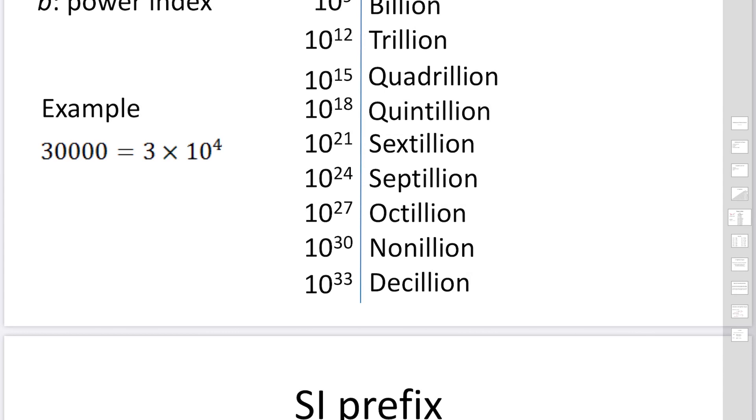For example, 30,000 can be expressed as 3 times 10 to the 4. We can also express small numbers. For example, 0.05 can be expressed as 5 times 10 to minus 2. Power index is very useful for both big and small numbers.